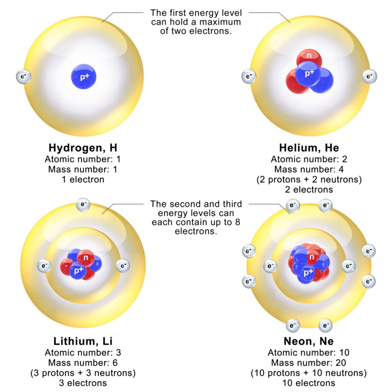Not only did the Bohr model explain the reason for the structure of the Rydberg formula, it also provided a justification for its empirical results in terms of fundamental physical constants. The Bohr model is a relatively primitive model of the hydrogen atom compared to the valence shell atom. As a theory, it can be derived as a first-order approximation of the hydrogen atom using the broader and much more accurate quantum mechanics, and thus may be considered to be an obsolete scientific theory.